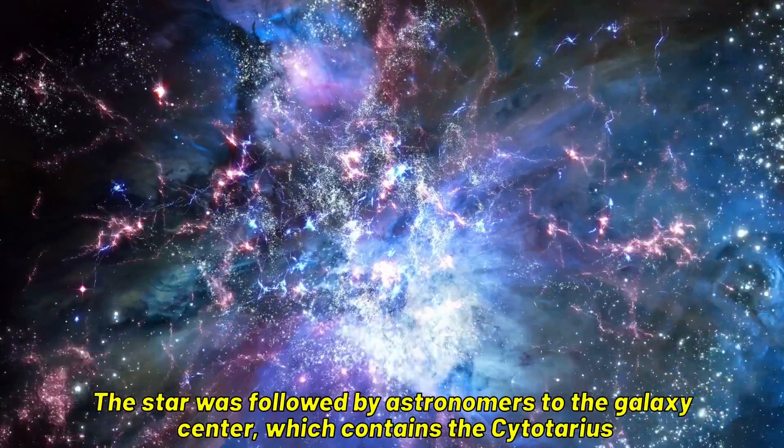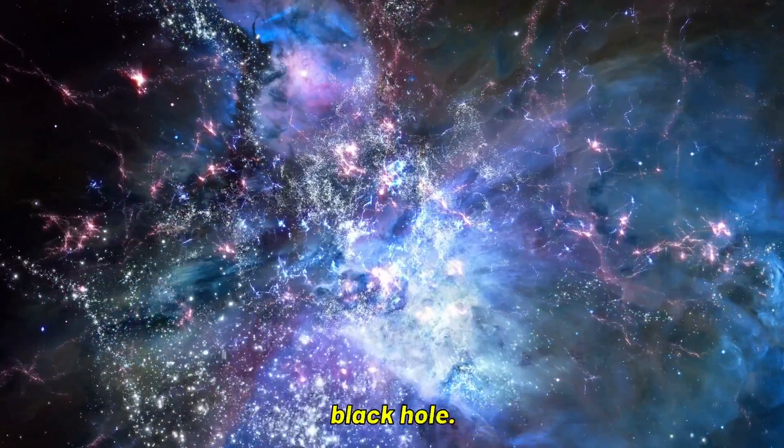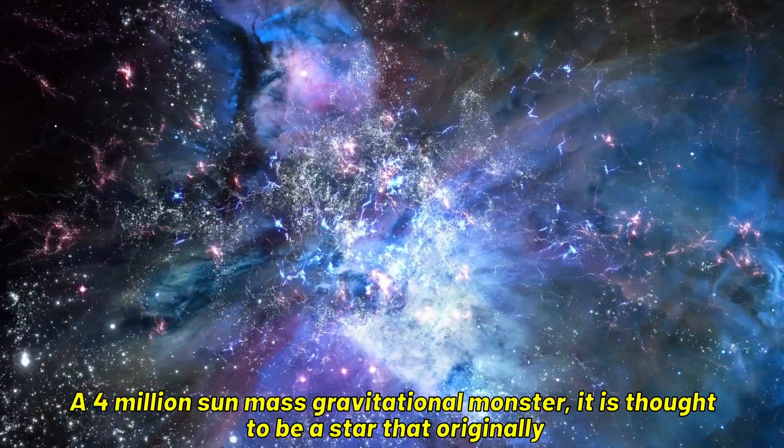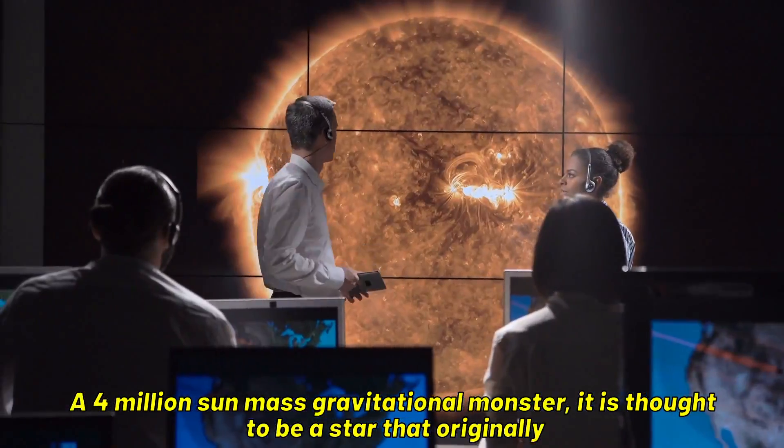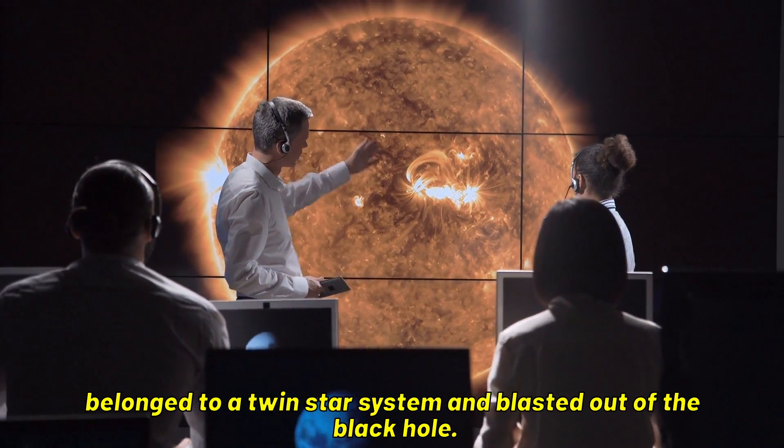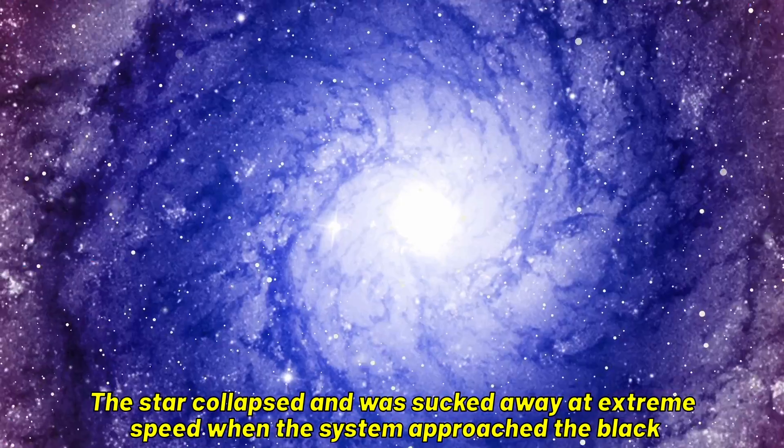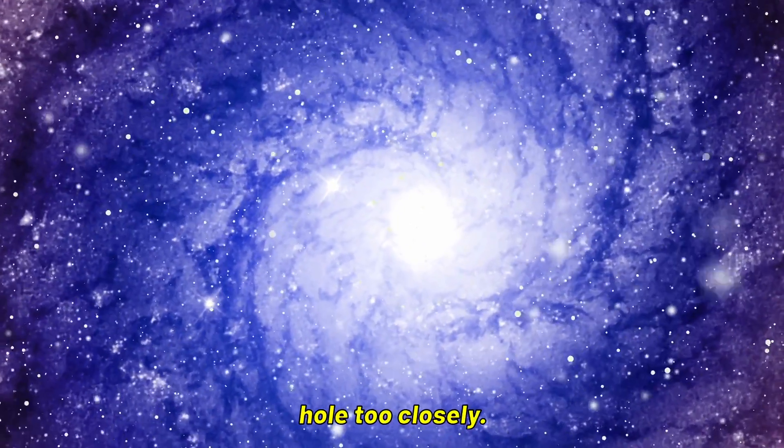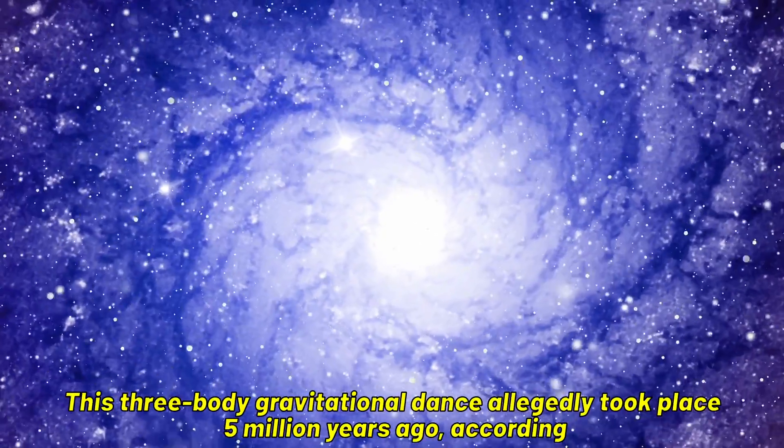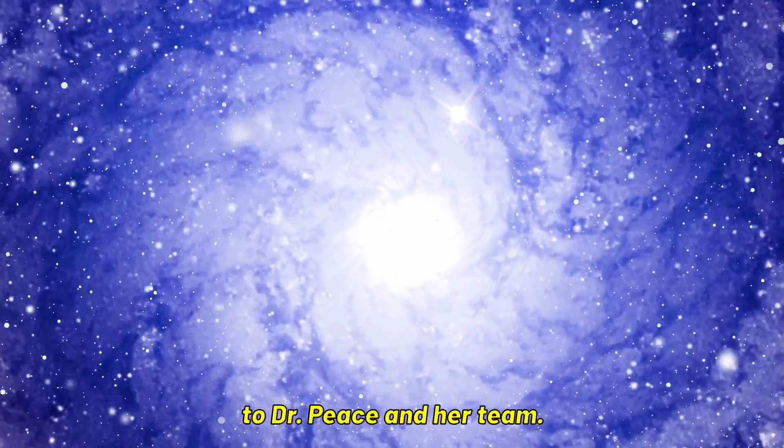The star was followed by astronomers to the galaxy center, which contains the Sagittarius Black Hole, a 4 million sun-mass gravitational monster. It is thought to be a star that originally belonged to a twin star system and blasted out of the black hole. The star collapsed and was sucked away at extreme speed when the system approached the black hole too closely. This three-body gravitational dance allegedly took place 5 million years ago, according to Dr. Peace and her team.